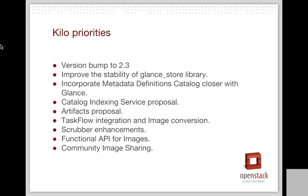Some of the new features we are planning to add in Kilo are listed here. One important thing we have done is bumped up the version to 2.3 — it's a minor version bump. There was a small change within the API and we wanted the API to remain compatible for operators. Another really important concern for us is the stability of the Glance Store library. It was separated out late in the Juno cycle and is still in the alpha phase of development. We would like to improve the release management as well as provide a cleaner API, which will help other services within the OpenStack umbrella to leverage the store drivers without duplicating the code themselves.